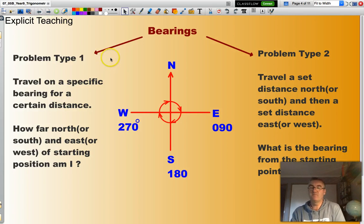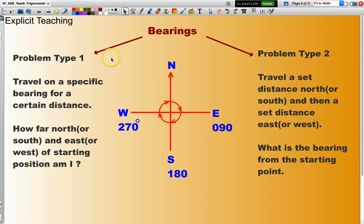There are two types of problems we will be looking at during this presentation. The first type of problem, say for instance I travel on a specific bearing for a certain distance and I may wish to calculate how far east or how far west, how far north or how far south of my original starting point I have travelled.